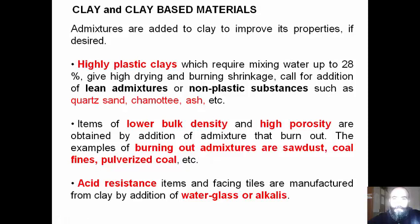Highly plastic clays, which require mixing water up to 28 percent, give high drying and burning shrinkage, calling for addition of lean admixtures or non-plastic substances such as quartz sand, chamotte, and ash. Items of lower bulk density and high resistance are obtained by addition of burning-out admixtures — examples include sawdust, coal fines, and pulverized coal. Acid-resistant items such as facing tiles are manufactured from clay by addition of water glass or alkalis.